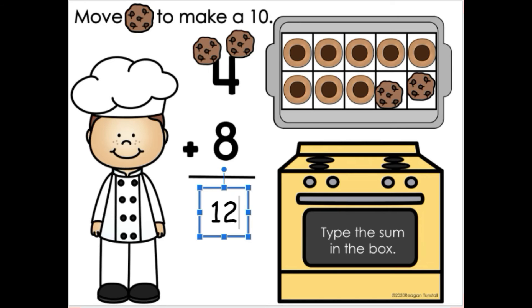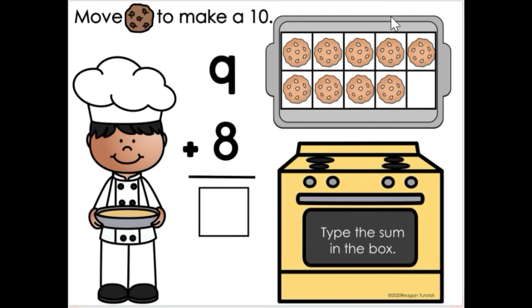All right. Let's try one more. So we've got 1, 2, 3, 4, 5, 6, 7, 8, 9 cookies here. I'm going to make 8 more. So I'm going to pull down 8 cookies: 1, 2, 3, 4, 5, 6, 7, 8.